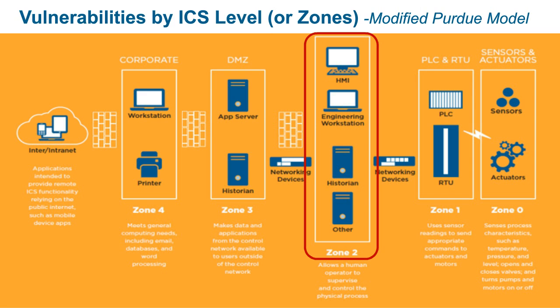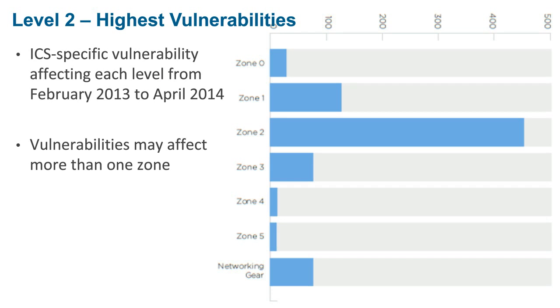The research suggests that the most likely system to be exploited in an industrial environment is actually a Windows PC, because that's where known exploits exist. There are lots of publicly available tools to break into those systems and lots of vulnerabilities. In industrial environments, sometimes you don't even realize where all these Windows systems live. Sometimes it's exhibiting itself as an HMI — a human machine interface — but it might be running an embedded version of Windows on the back end.